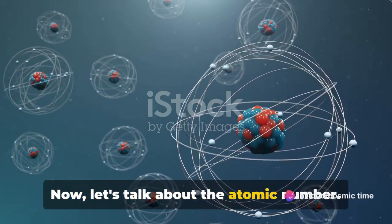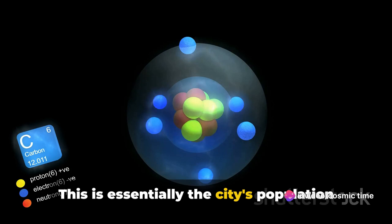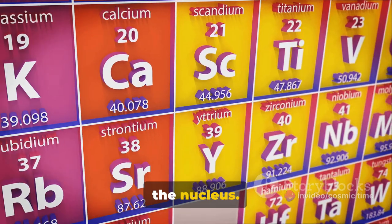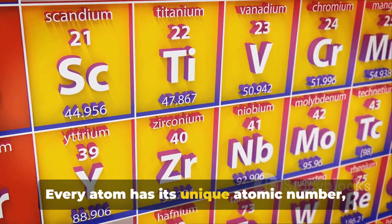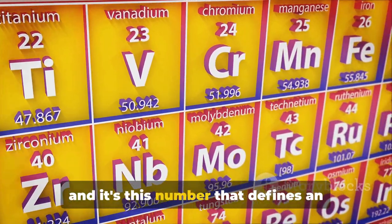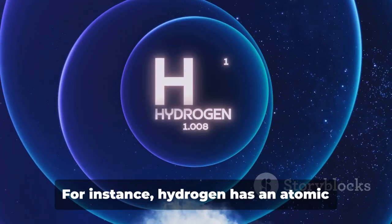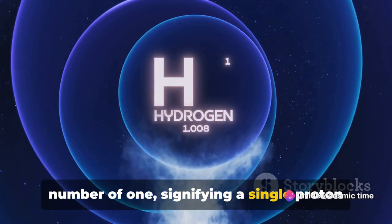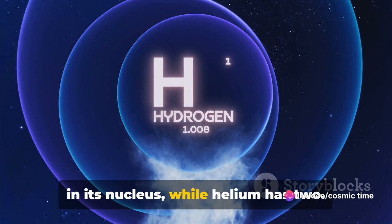Now, let's talk about the atomic number. This is essentially the city's population census, counting the number of protons in the nucleus. Every atom has its unique atomic number, and it's this number that defines an atom's identity. For instance, hydrogen has an atomic number of 1, signifying a single proton in its nucleus, while helium has 2.